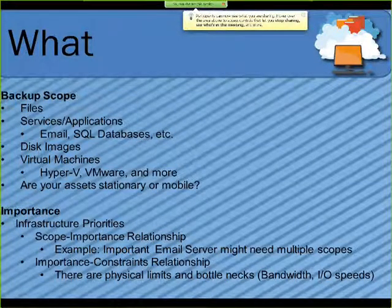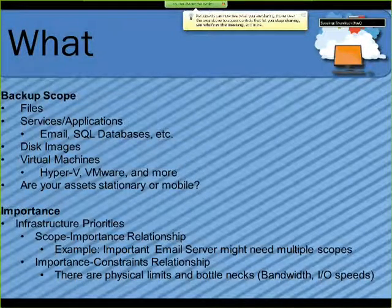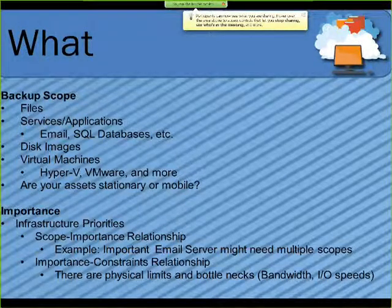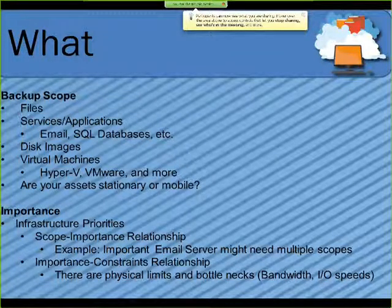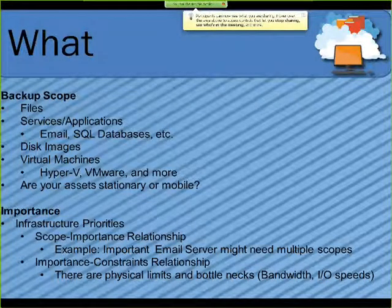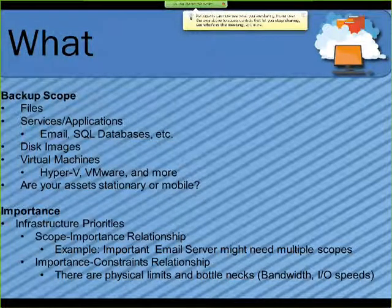Next, especially if you're doing disaster recovery planning, you need to come up with a list of priorities. A good idea might be to list your infrastructure and grade it based on what's absolutely needed for the business to run versus what is more of a value-added piece. For example, if you have a critical email server, you might need to do more than one backup scope, as opposed to a couple of documents on a user profile.